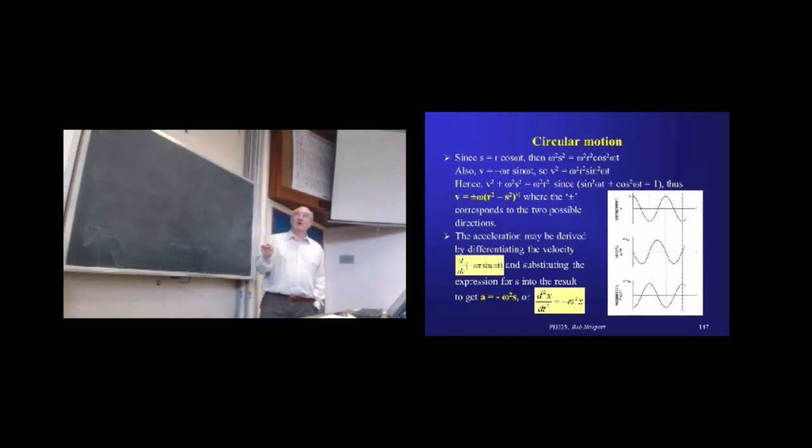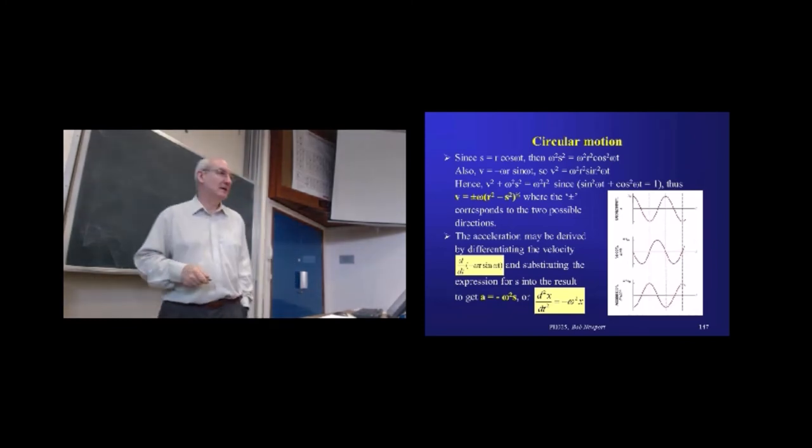Now, if we've got the velocity of our pendulum bulb, of course, we can also produce the acceleration in exactly the same way. We just differentiate it again with respect to time. So, I'm going to produce dv by dt basically. So, here it is. It's v in the bracket. dv by dt is the acceleration.